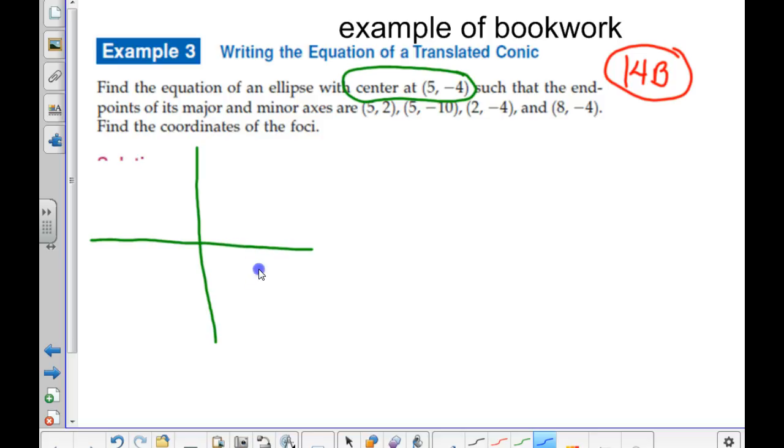The center is at 5, negative 4. One of the endpoints is at 5, 2. Another is at 5, negative 10. 2, negative 4. So I'm thinking that's our minor axis. 2, negative 4. Does that seem like the shorter distance? And over here was 8, negative 4.